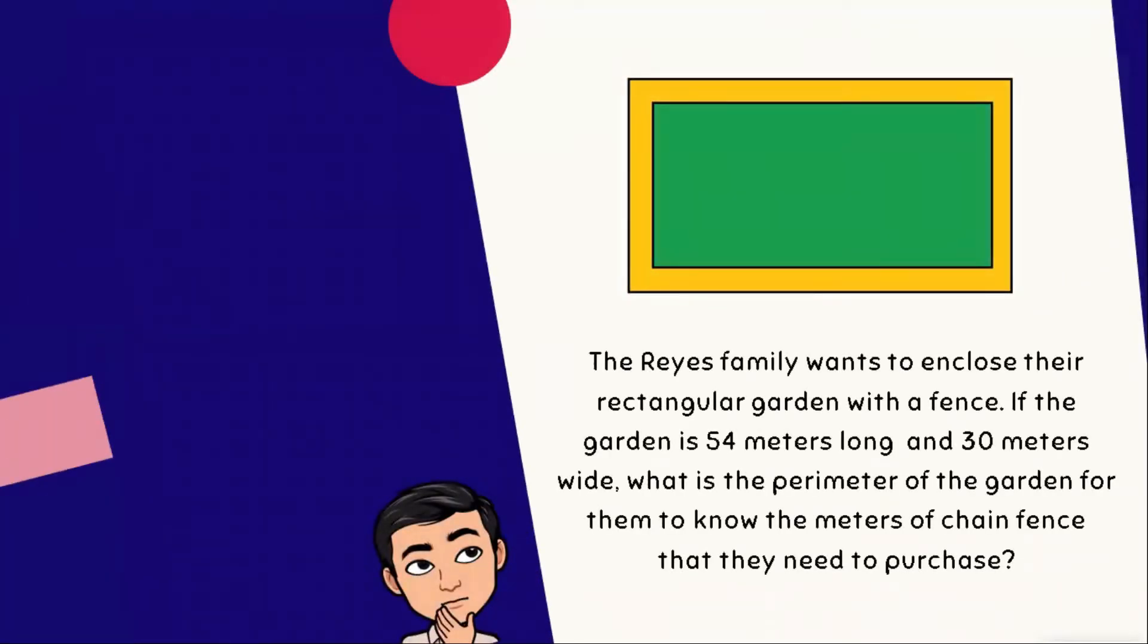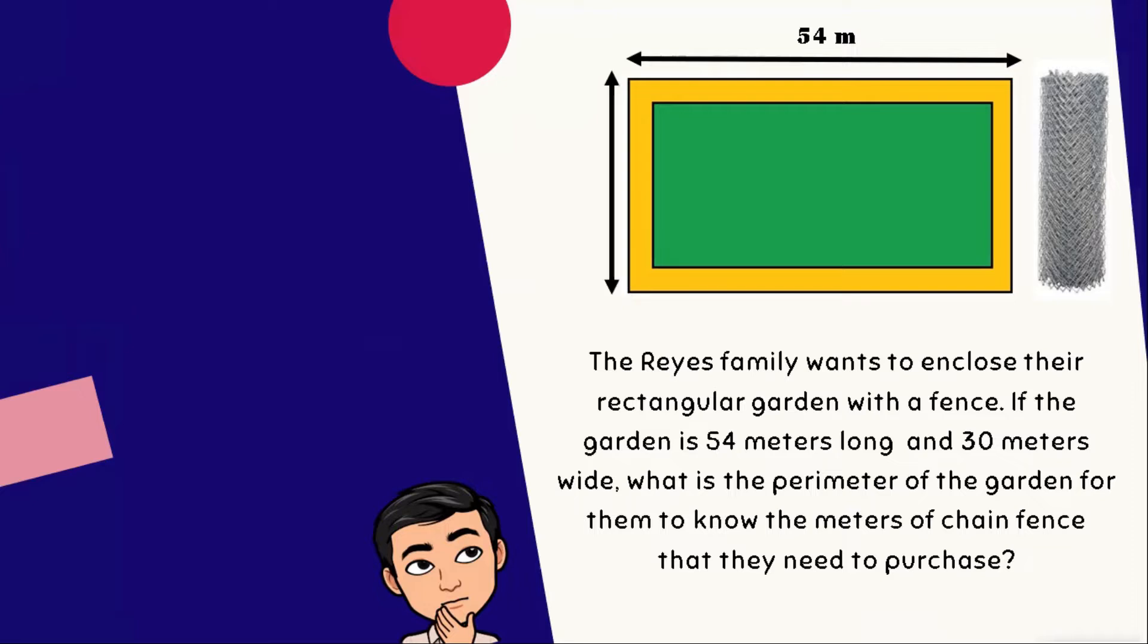The Reyes family wants to enclose their rectangular garden with a fence. If the garden is 54 meters long and 30 meters wide, what is the perimeter of the garden for them to know the meters of chain fence that they need to purchase? By understanding this given situation, we are going to solve for the perimeter of the garden in order to know the length of the chain fence that they need to buy.